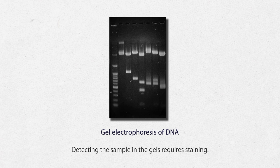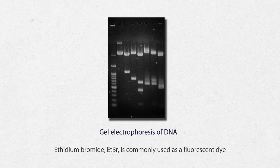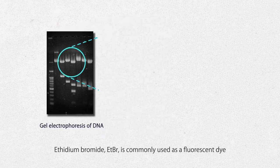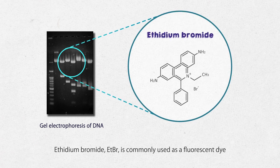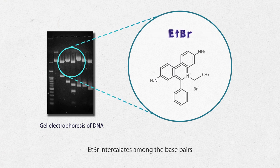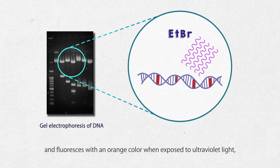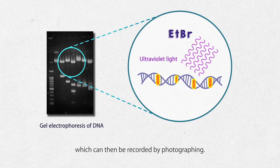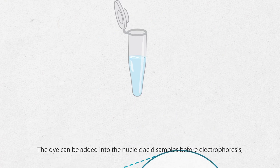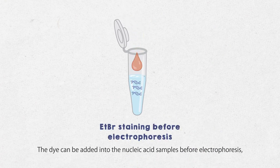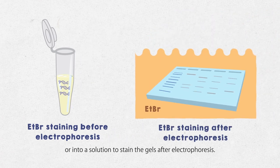Detecting the sample in gels requires staining. Ethidium bromide, EtBr, is commonly used as a fluorescent dye for staining nucleic acids. EtBr intercalates among the base pairs and fluoresces with an orange color when exposed to ultraviolet light, which can then be recorded by photographing. The dye can be added into nucleic acid samples before electrophoresis or into a solution to stain the gels after electrophoresis.